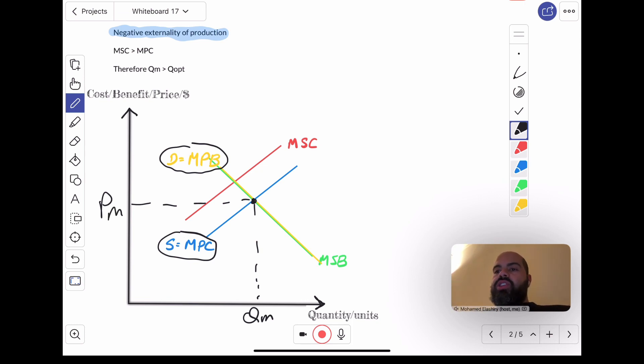However, the intersection of MSC and MSB will give us the socially optimum quantity, QOpt, and the socially optimum price, POpt. So, because MSC is greater than MPC, this vertical distance between MSC and the MPC is the external cost of this production process.